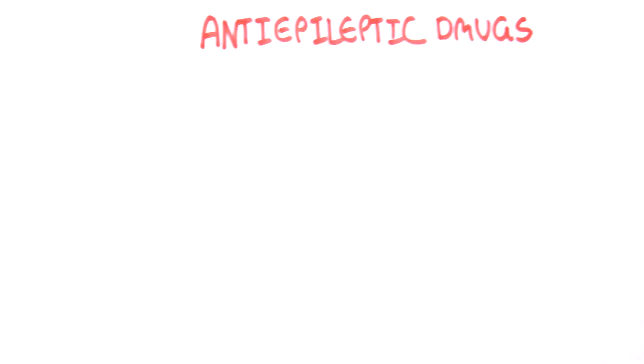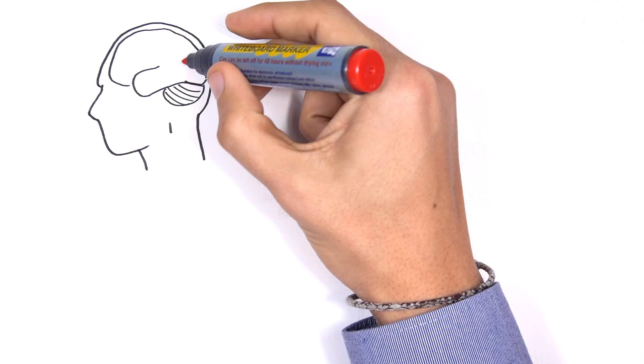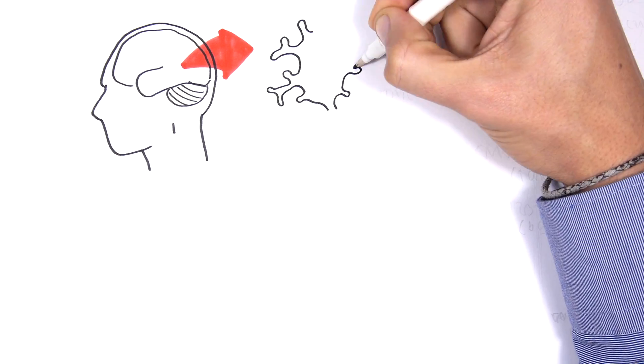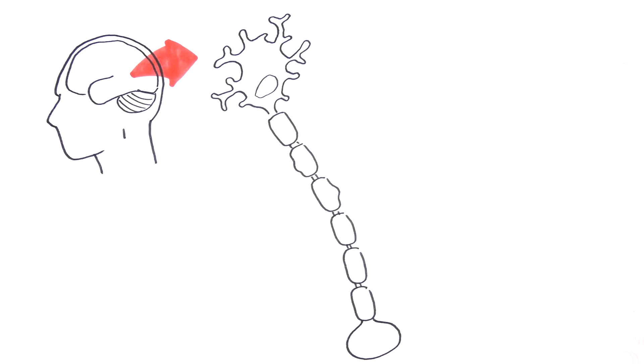Epilepsy is a disease characterized by seizures. There are different types - seizures that are well localized in the brain or that spread out throughout the whole brain. In this video, we're only going to focus on the pharmacology of epilepsy.